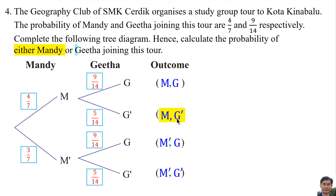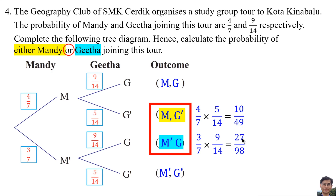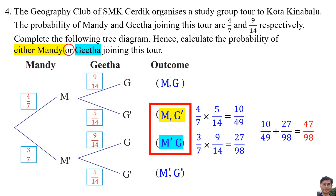Either Mandy or Gita joining means we need the complement of both not joining. The probability of Mandy joining and Gita not joining is 4 over 7 multiplied by 5 over 14, which equals 10 over 49. The probability of Mandy not joining and Gita joining is 3 over 7 multiplied by 9 over 14, which equals 27 over 98. The sum of these two probabilities gives 47 over 98.